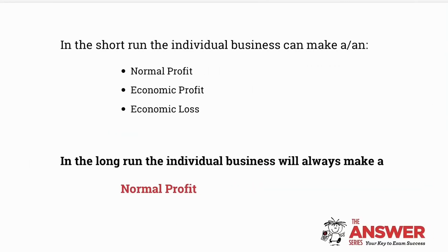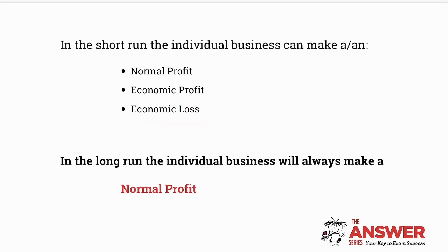In our previous lessons we learned that in the short run a business can earn a normal profit, an economic profit, or it can incur an economic loss. A defining characteristic of the long run is that an individual business can only ever earn a normal profit. So in essence, in the short run economic profits and economic losses can occur, but in the long run only normal profits can ever occur.